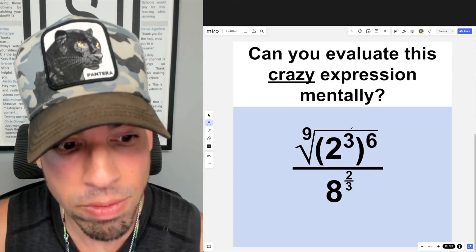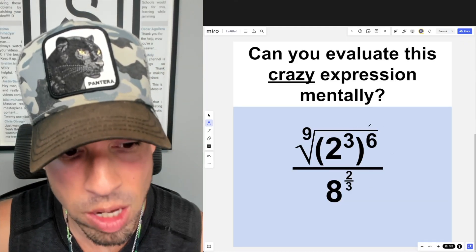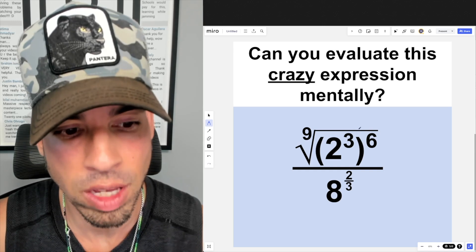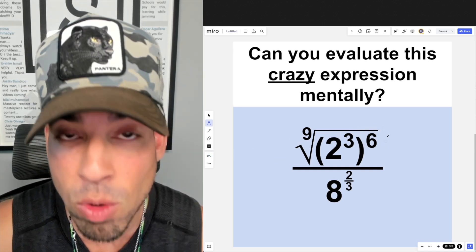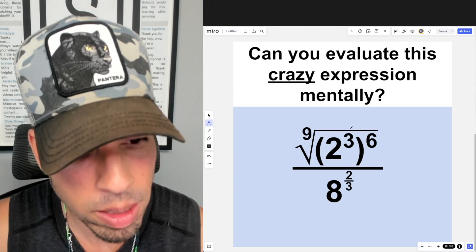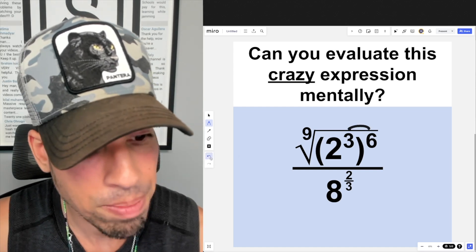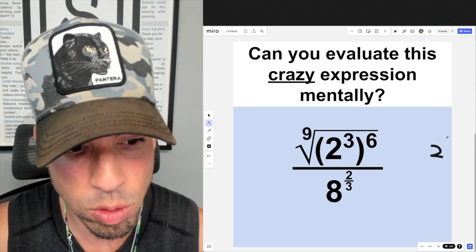As we start to evaluate this mentally, I'm just going to show you the operations in order that you should follow. First I see this exponent out here and this exponent in here. When you have this floating exponent as I call it, we multiply. Then that becomes 2 to the 6 times 3, which is 18.